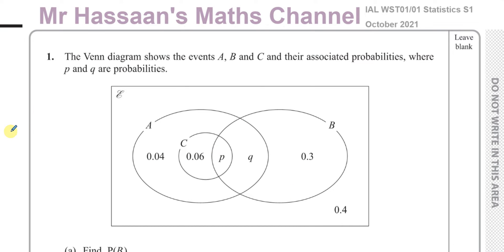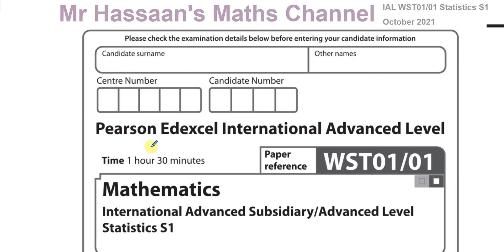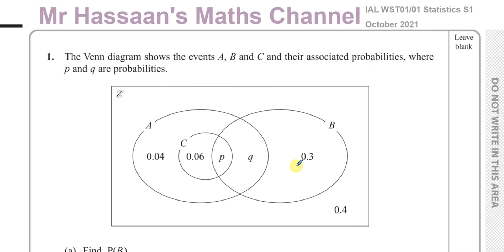Welcome back. This is Mr. Hassan's Maths Channel, and the paper I'm going through now is the International A-Level Edexcel Pearson's Statistics S1 from October 2021. I'm going to go through each question one by one, making a separate video for each question and collating them in playlists according to the topic as well as the paper. I'll start with question number one, which is about probability.